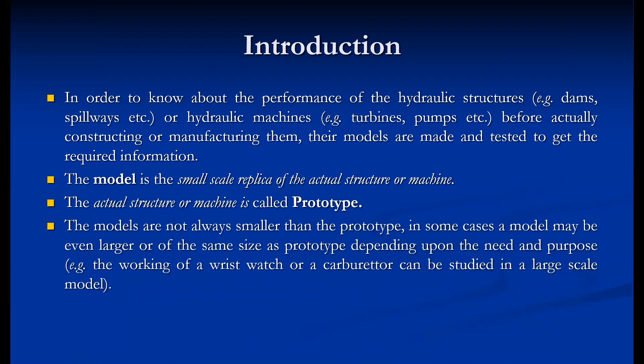The models are not always smaller than the prototype. In some cases, the model may be even larger or of the same size as the prototype, depending upon the need and purpose. For example, the working of a wristwatch, a carburetor, or even a nanoturbine can be studied using a large-scale model, because sometimes it is very difficult to perform trials on very small or tiny devices. So in those cases, their models are bigger than the prototype.